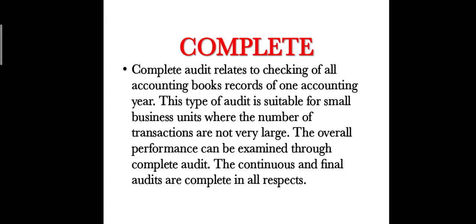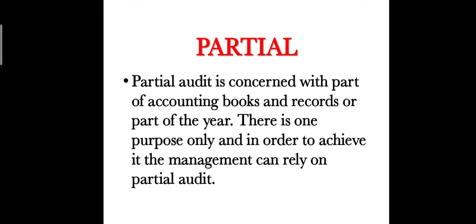Complete audit relates to checking of all accounting books and records of one accounting year. This type of audit is suitable for small business units where the number of transactions are not very large. The overall performance can be examined through complete audit. The continuous and final audit are complete in all respects. Next is partial audit. Partial audit is concerned with part of accounting books and records, or part of the year.